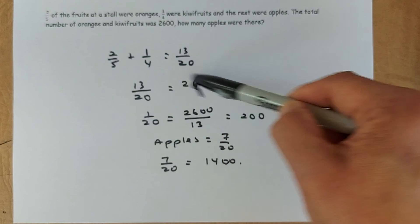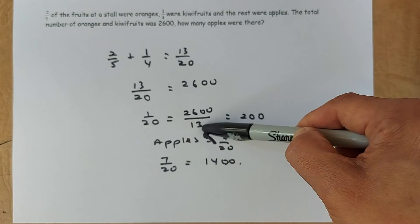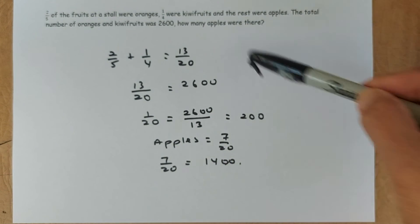13 over 20 is going to be 2,600 because they say oranges and kiwi fruit add up to 2,600. So you need to find 1/20. 1/20 is 2,600 divided by 13, 200.